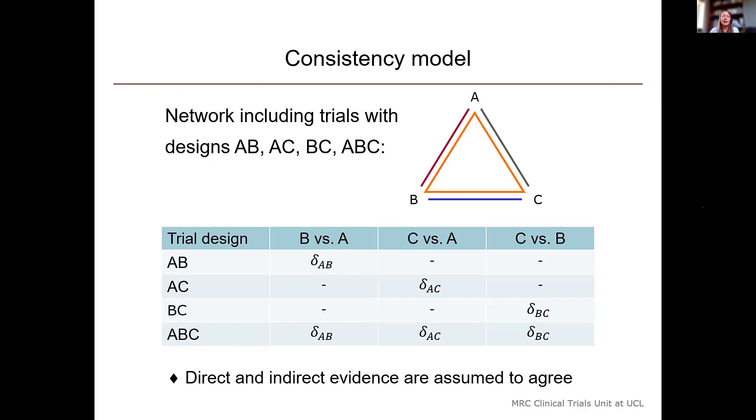So, here I've shown a simple network that includes two-arm trials comparing each pair of treatments amongst A, B, and C, together with a three-arm trial comparing all of A, B, and C.